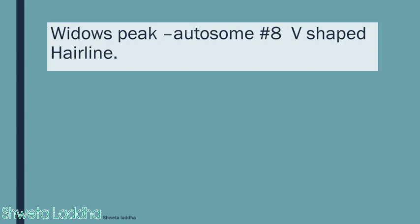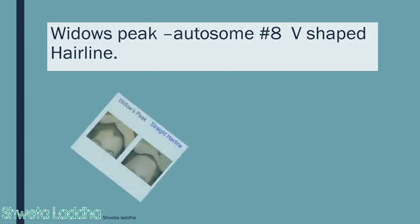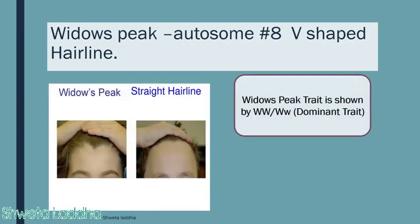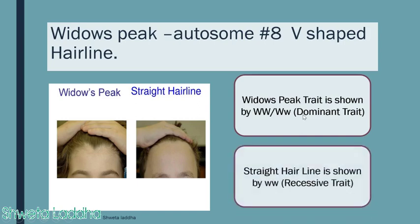Starting with autosomal dominant inheritance, widow's peak is a trait caused by a dominant gene on autosome number 8. It causes a V-shaped hairline pattern. A person with widow's peak may have a homozygous dominant (WW) or heterozygous (Ww) genotype, because it is a dominant trait. In the homozygous recessive condition, the person shows a straight hairline, which is the normal trait.